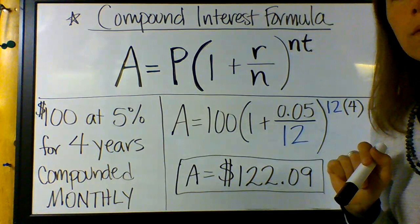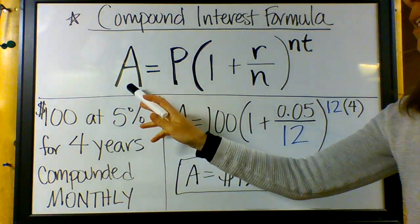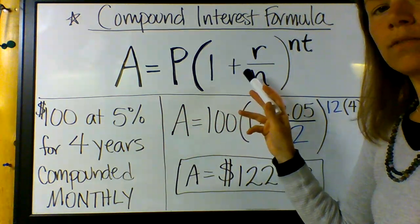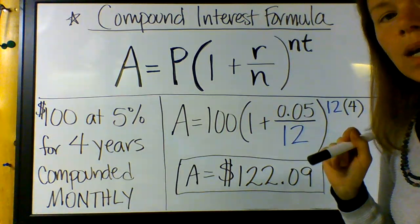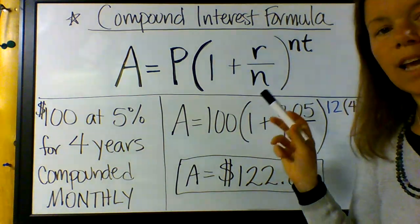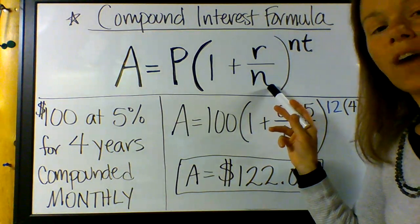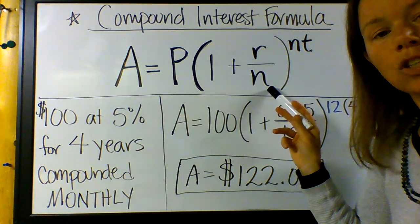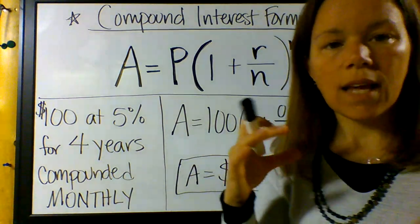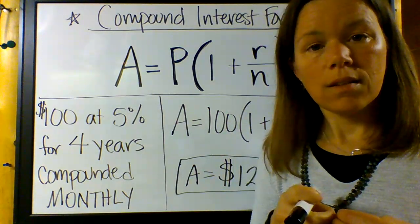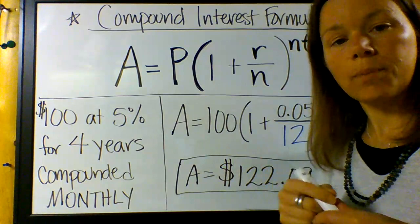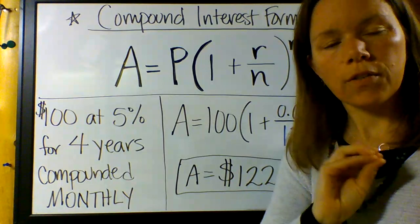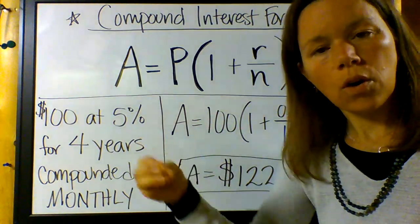This is still the compound interest formula. The total amount of the loan is still based on this idea that we do the principal times 1 plus the rate to the amount of time. But what we're going to do is we're going to take that interest rate and divide it by the number of times it gets compounded each year. So if it's 5%, we're going to turn that into 0.05 and divide it by 12. We'll take one-twelfth of it and apply it after January, the next twelfth after February, and so on all the way through the whole year.